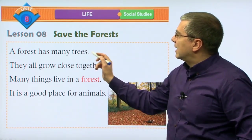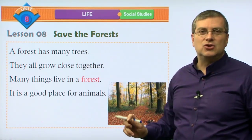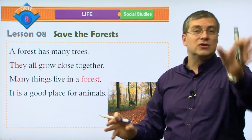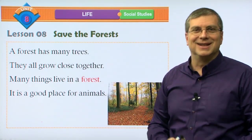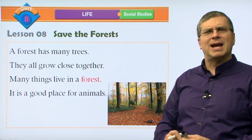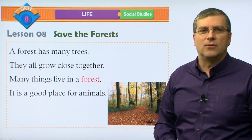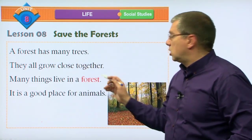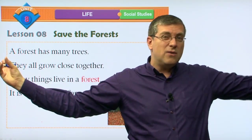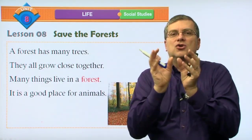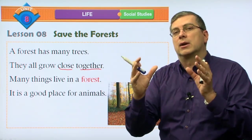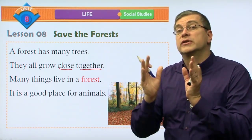A forest has many trees. There are a lot of trees in the forest, and they all grow close together. If you have one tree and another tree way over there, that's not a forest - you have to have many trees close together. So you have many trees that are close together.